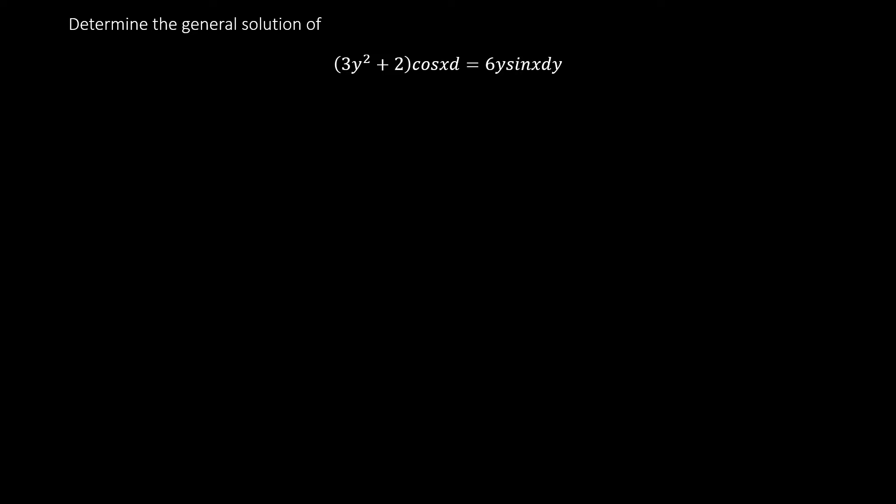First example: determine the general solution. Sometimes a question just says 'determine the solution' — if no point is given, it is general; if a point is given, it is particular. The equation here is (3y² + 2) cos x dx = 6y tan x dy.